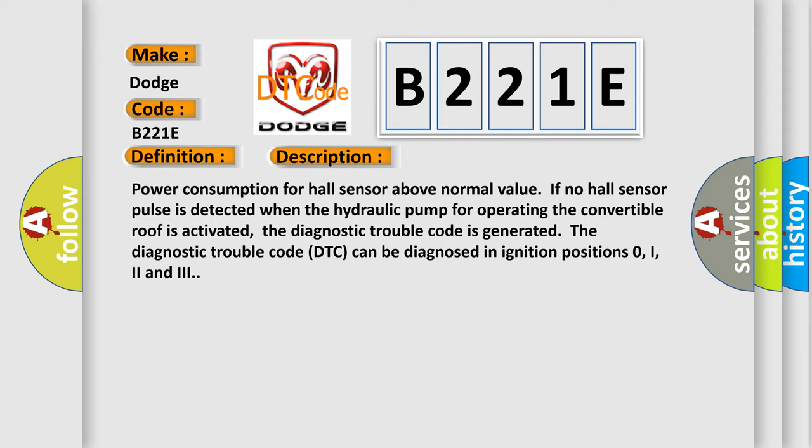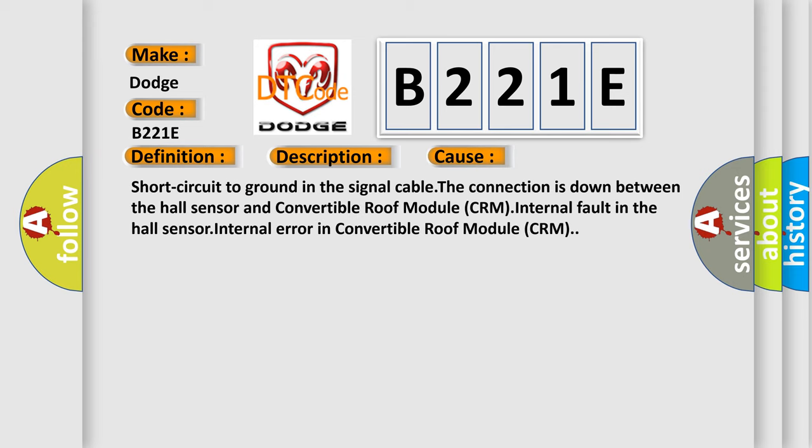This diagnostic error occurs most often in these cases: Short circuit to GND in the signal cable, the connection is down between the Hall sensor and convertible roof module CRM, internal fault in the Hall sensor, or internal error in convertible roof module CRM.